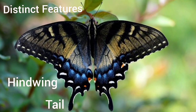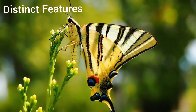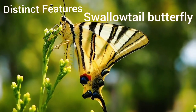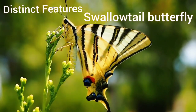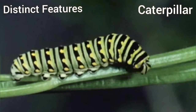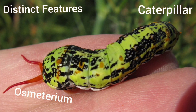Tail-like extensions of hind wings resemble the tails of swallows, which give it the common name swallowtail butterfly. The Peplionidae caterpillar has an osmeterium on its prothorax.